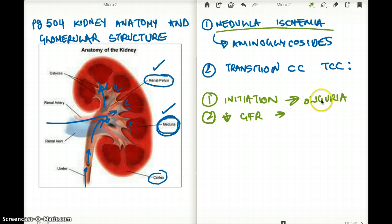And the oliguria is going to be maintained. This is going to be the maintenance phase, where the GFR is going to be decreased but it's going to maintain at that level.